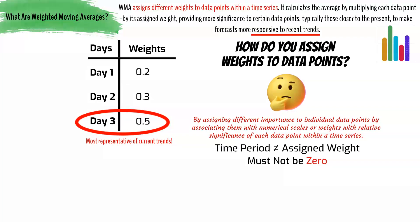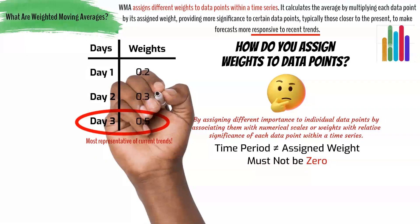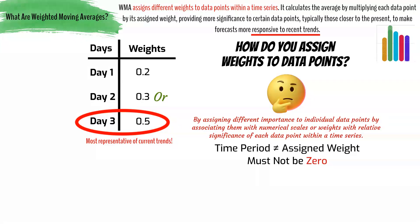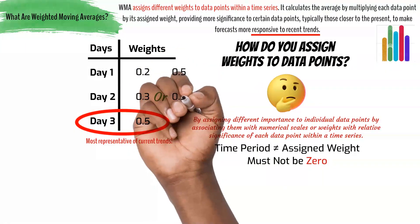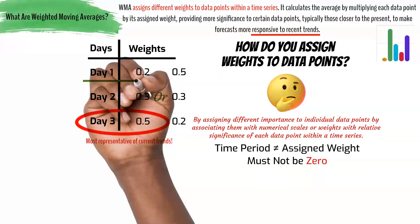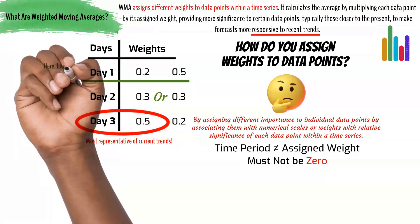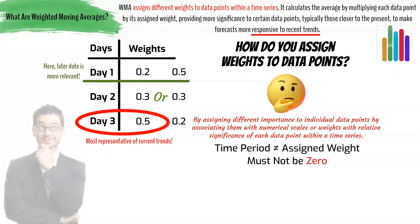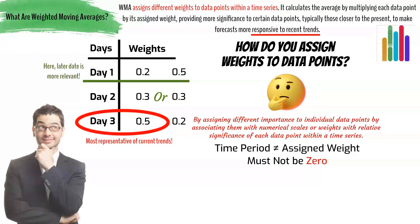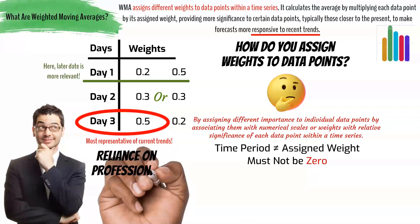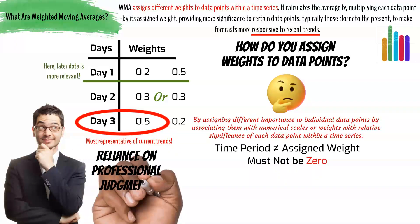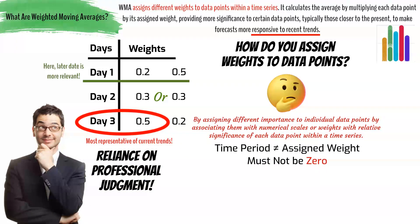You can also use other weighting schemes depending on specific forecasting needs. For example, if you believe that the data is more volatile at the beginning of the time period, you could give more weight to the later data points. The key is to choose weights that reflect your expert judgment about which data points are more informative in predicting future values.